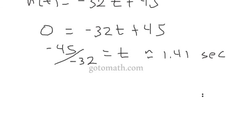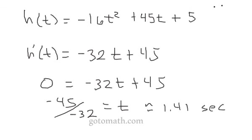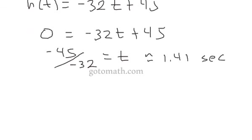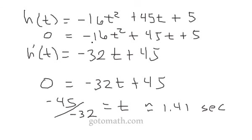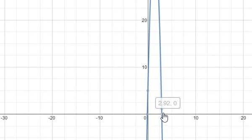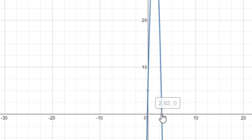So it took 2.92 seconds for the ball to travel upward from 5 feet above the ground, go all the way up, and then come all the way down and hit the ground. Now that we have the position function, we can get these numbers. To find the maximum, take the derivative: h prime of t equals negative 32t plus 45, set equal to 0 and solve for t. We get t equals negative 45 over negative 32, which is approximately 1.41 seconds. To find when the ball hits the ground, set h of t equal to 0 and solve — you'll probably need the quadratic formula and get solutions of approximately negative 0.11 and 2.92, and 2.92 is the solution we want.